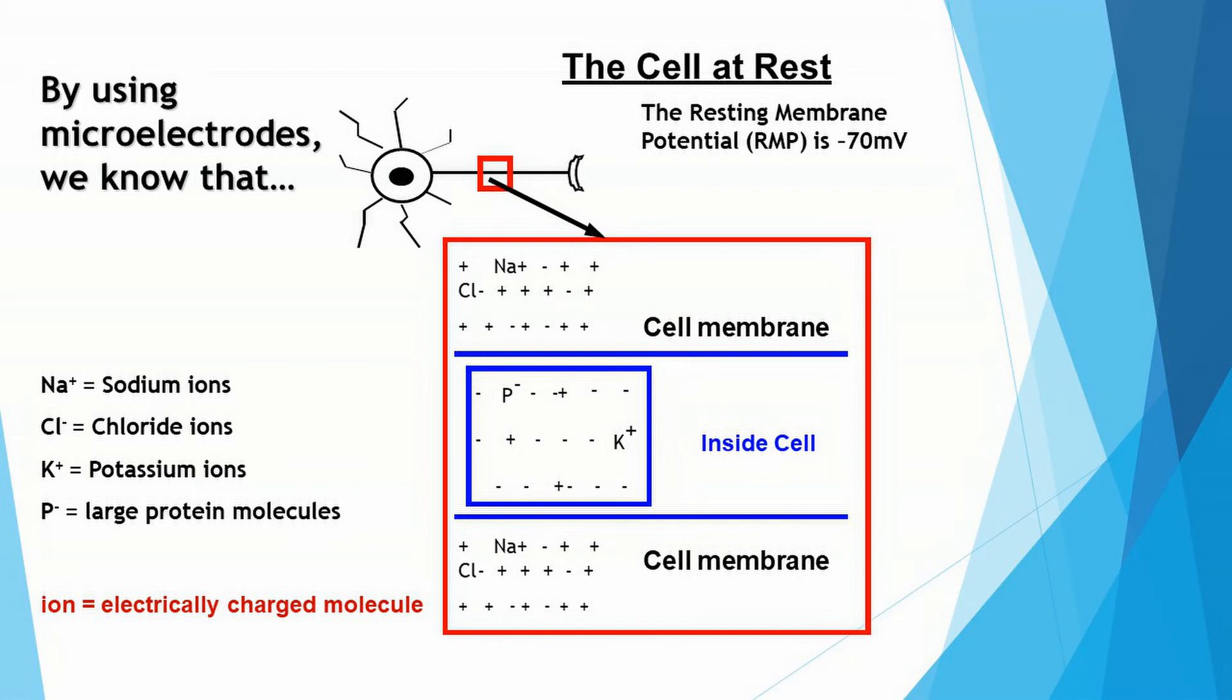Now this is a portion of the course where some people start feeling intimidated or uncomfortable. They believe they don't like biology. And I don't want you to feel that way. I'm going to be very clear about what I want you to know. And here it is. I want you to know that the resting membrane potential of a neuron when it's at rest is minus 70 millivolts. Know that number.